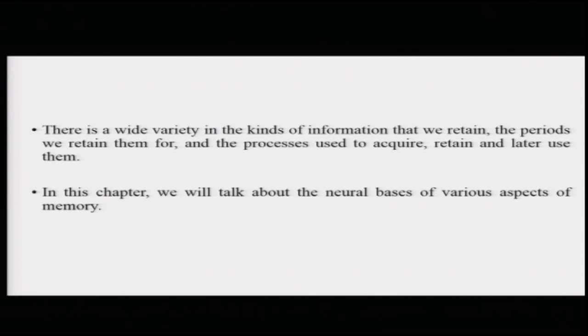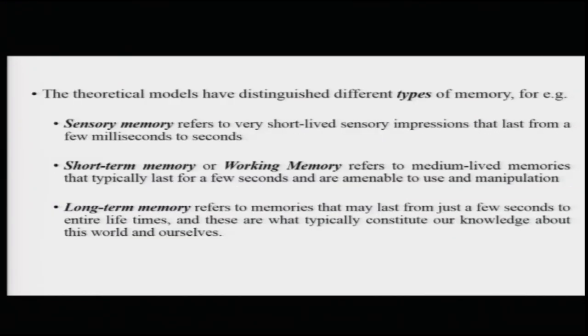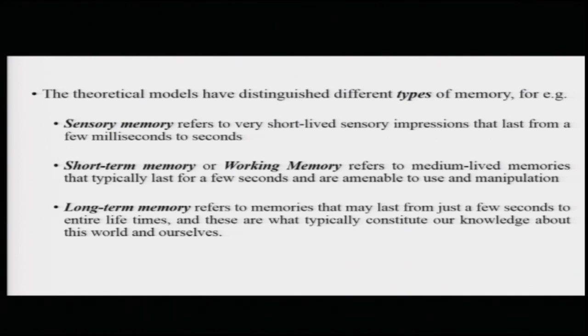There is a wide variety in the kinds of information that we retain, the period we retain them for, and the processes used to acquire, retain, and later use them. Theoretical models of memory have distinguished three kinds of memory or three stages. First is sensory memory, which refers to very short-lived sensory impressions lasting from a few milliseconds to a maximum of one second. This encompasses all information impinging on your senses — auditory, visual, olfactory, taste, touch — and can be considered the initial stage of sensory memory.